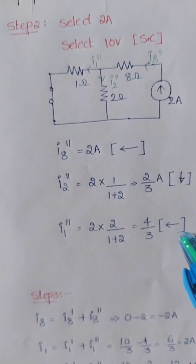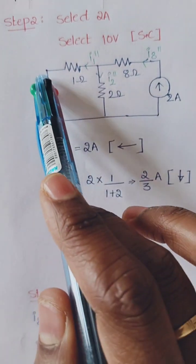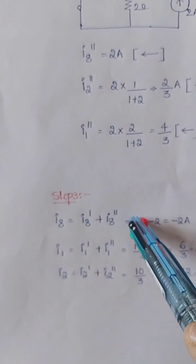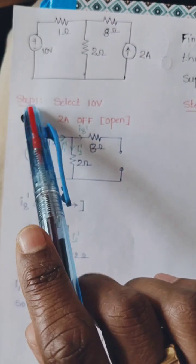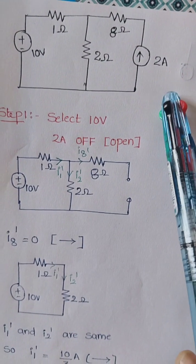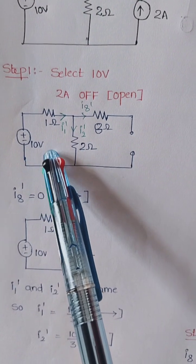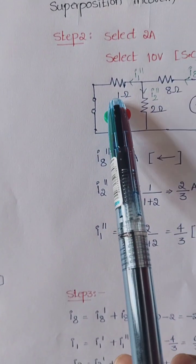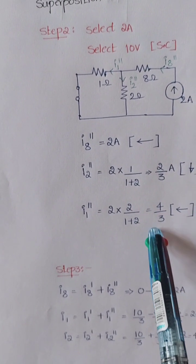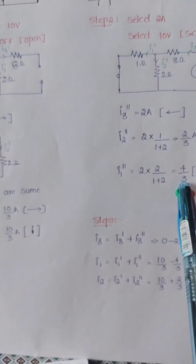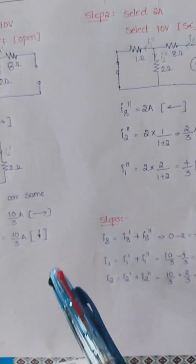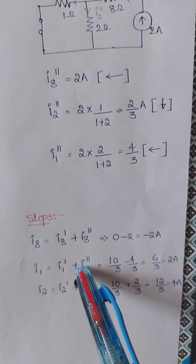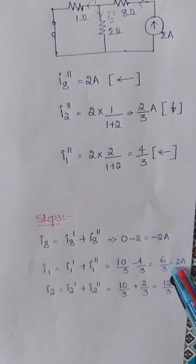Step 3: We add the responses caused by each individual source. For the 1 ohm resistor: the response due to the 10 volt source is 10/3 A (left to right), and the response due to the 2 ampere source is 4/3 A (right to left). Since the directions are opposite, we subtract: I₁ = 10/3 − 4/3 = 6/3 = 2 amperes.